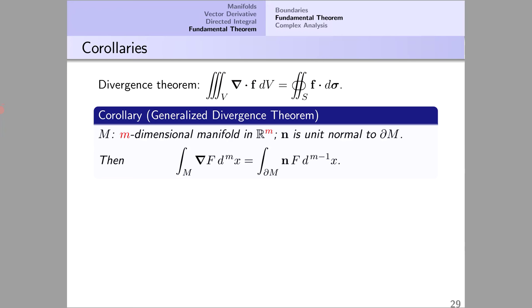Here is the corollary. It starts with an M-dimensional manifold in RM. Here, V is a three-dimensional manifold, a solid, in R3. N is the unit normal to the boundary of M. Recall that this D-sigma was a vector orthogonal to S and that orthogonality survives as this vector N.